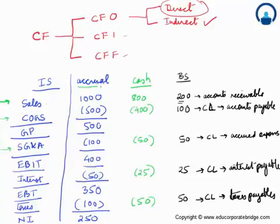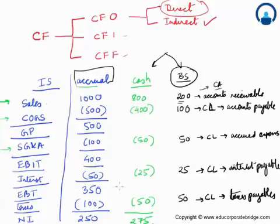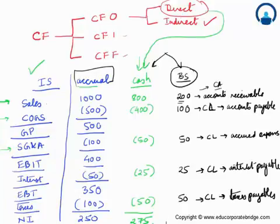Because of the accrual method of accounting, each line item splits into cash paid and an unpaid portion recorded in the balance sheet as current assets or current liabilities. Summing the actual cash flows: 800 received from sales, less 400 paid for COGS, less 50 for SG&A, less 25 for interest, less 50 for taxes — gives us 275. This is the direct method: looking at each income statement item and summing the actual cash received and paid.